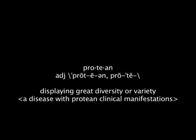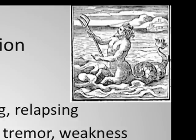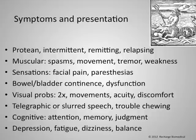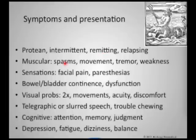Because of that, it's a very protean disease. This is Proteus, the god of the sea, who was able to assume many different forms. Protean is never a good thing in medicine because it's hard to diagnose. In addition, disease can be intermittent, meaning it comes and goes — remitting, it gets better and comes back, as well as relapsing. These are kind of similar terms, although slightly different.